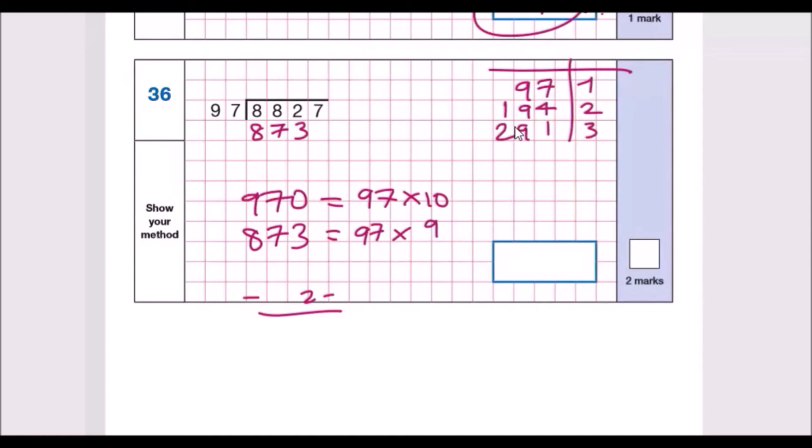Finding the remainder: subtracting, 82 take away 73 should give us 9. Drop the 7: 97 to 97 is once. That's it, all done - 91.